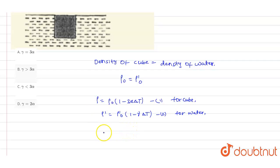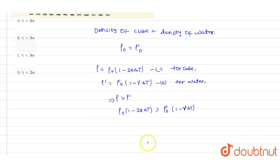Since for cube to sink, ρ will be greater than ρ', then only the cube will sink inside the liquid. So according to this situation, ρ₀ into 1 minus 3αΔt greater than ρ₀ into 1 minus γΔt.